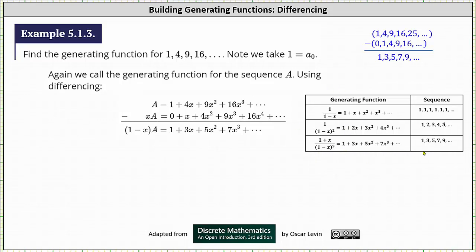Once we determine a generating function for a sequence, we can often use that function to determine new generating functions. Looking at the sequence of first differences: 4 minus 1 is 3, 9 minus 5 is 4, 16 minus 9 is 7, giving us the sequence 3, 5, 7, and so on, which resembles the sequence 1, 3, 5, 7, 9, ... — which is why the technique of differencing is a good choice here.